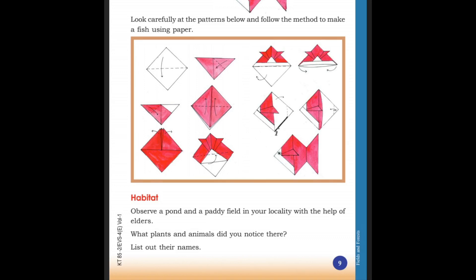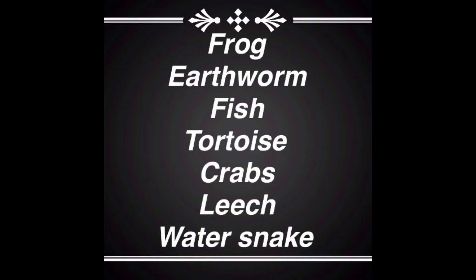Now I will list out the living things: frog, earthworm, fish, tortoise, crabs, leech, water snake. These are some of the living things we can see in ponds and paddy fields. Like this, you must also list out the names of plants.